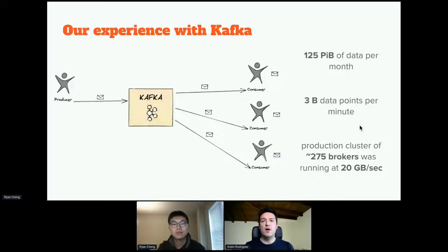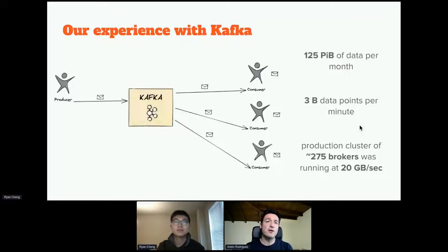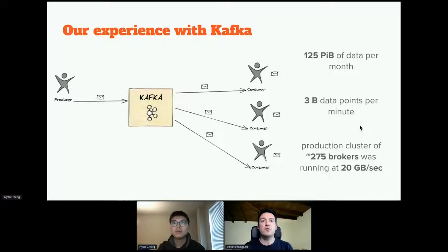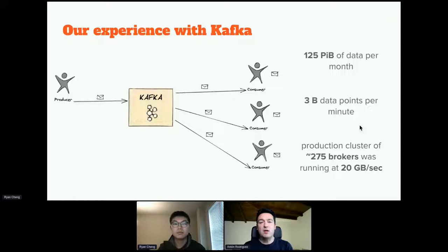If Kafka is something new for you, allow me to do a very short introduction. It's a distributed system to store information in a temporary way — it's really performant at ingesting data. The name comes from the famous writer Kafka, because Kafka is excellent at writing. A key use case is decoupling applications: instead of sending data directly between applications, we store it in Kafka so it can be consumed independently, which is great for distributed and event-driven architectures.